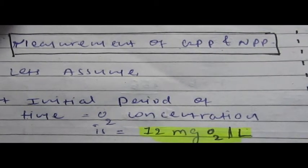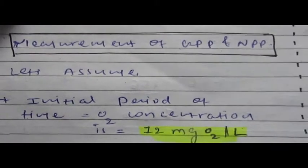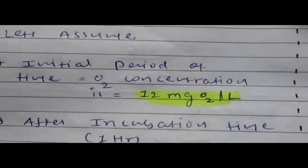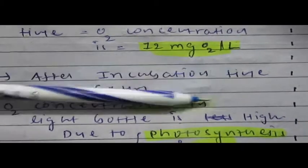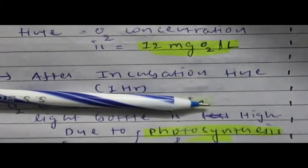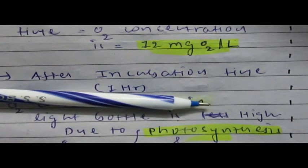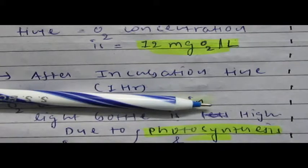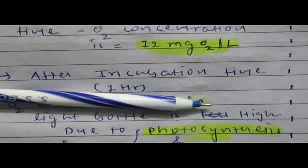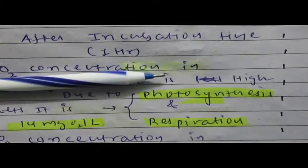At the initial period, when the bottle is fully filled with pond water, the oxygen concentration is 12 micrograms per liter. After the incubation period of one hour, the oxygen concentration in the light bottle is slightly higher, because photosynthesis and respiration together balance and slightly increase the oxygen concentration — let us assume it becomes 14 micrograms per liter.